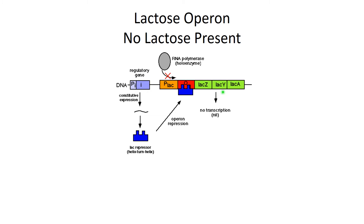The regulatory gene I controls transcription and translation of three structural genes in the lac operon: lacZ, lacY, and lacA. If these structural genes are transcribed and translated, the bacteria produce enzymes they need to break apart the sugar lactose.